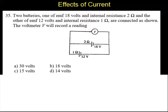Question number 35. Two batteries, one of EMF 18 volts and internal resistance 2 ohms and the other of EMF 12 volts and internal resistance 1 ohm are connected as shown. The voltmeter V will record a reading.